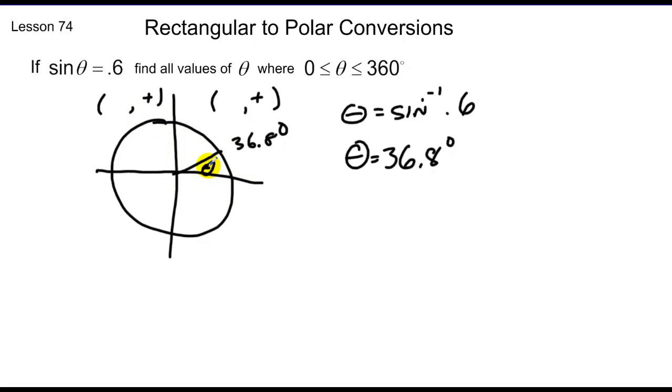But we also know that these circles are symmetric about the two axes. If I flip this over there's another y value of 0.6 over here, and it has a reference angle that is also 36 degrees away. So if I move back 36 degrees from 180, I'm going to get 143.2. Your calculator will never give you this because it only gives you function values, one y for every x. We always have to come up with this one on our own.